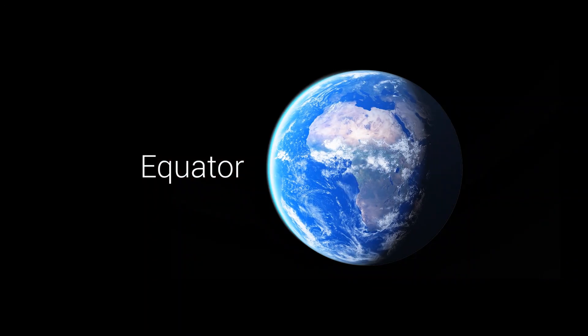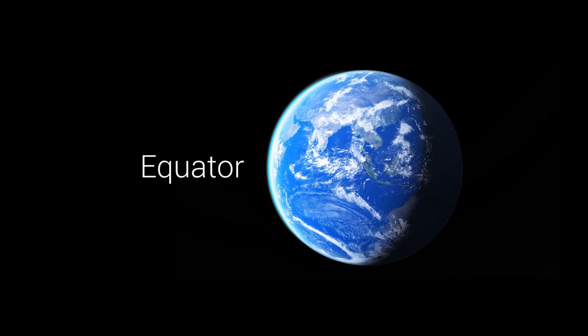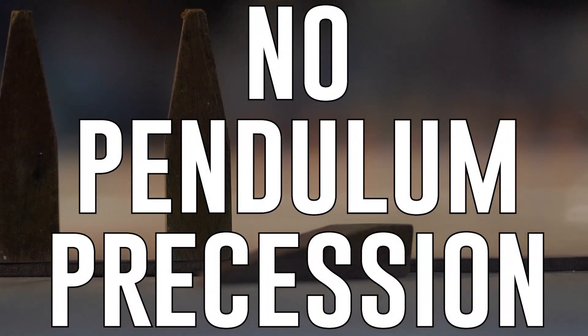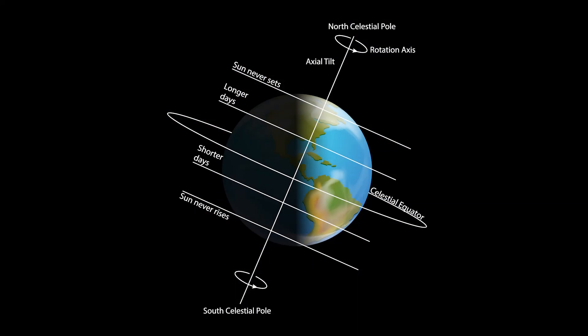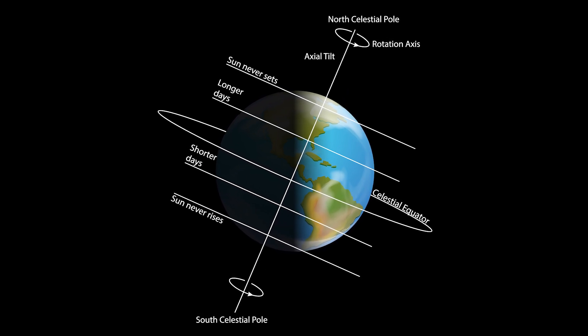In contrast, at the equator, which is perpendicular to the Earth's rotational axis, there is no pendulum precession, because at this latitude, the Earth's rotation does not impart any torque that would affect the pendulum's swing.